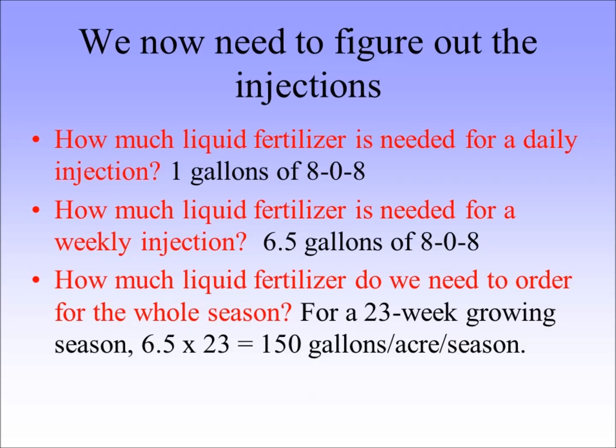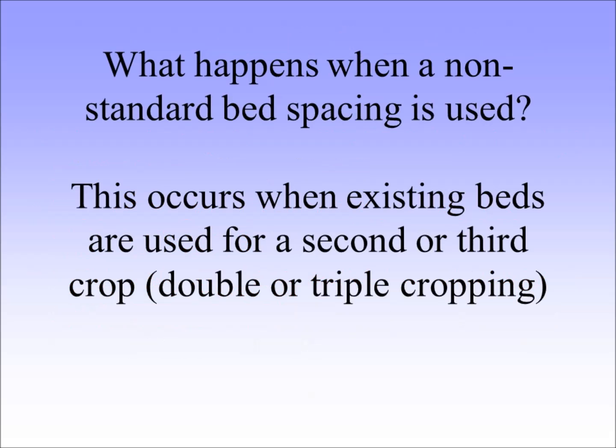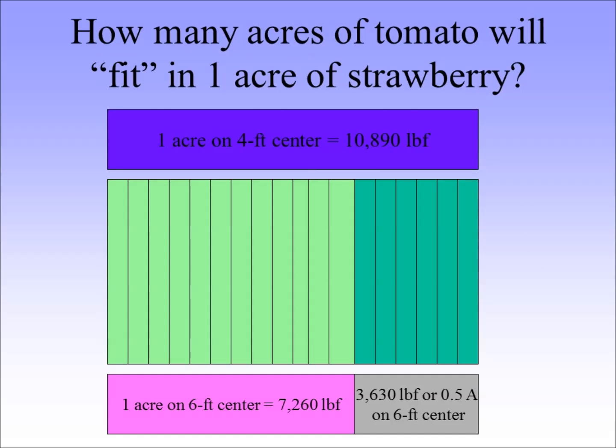There is one more calculation — when you use non-standard bed spacing. We gave you the example of the mini melons, and the most common case is when people double crop. Because you don't come and move the beds for the second crop just to accommodate IFAS recommendations. This is a grower who grew strawberries and now wants to put tomatoes as a double crop.